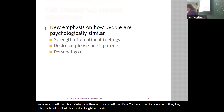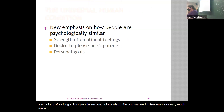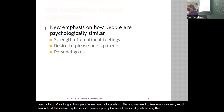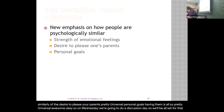Last slide — I got through it. There's a new emphasis in psychology on looking at how people are psychologically similar. We tend to feel emotions very similarly across cultures. The desire to please your parents is pretty universal. Having personal goals is pretty universal too. On Wednesday we're going to do a discussion day — we'll be all set for that. Thank you.